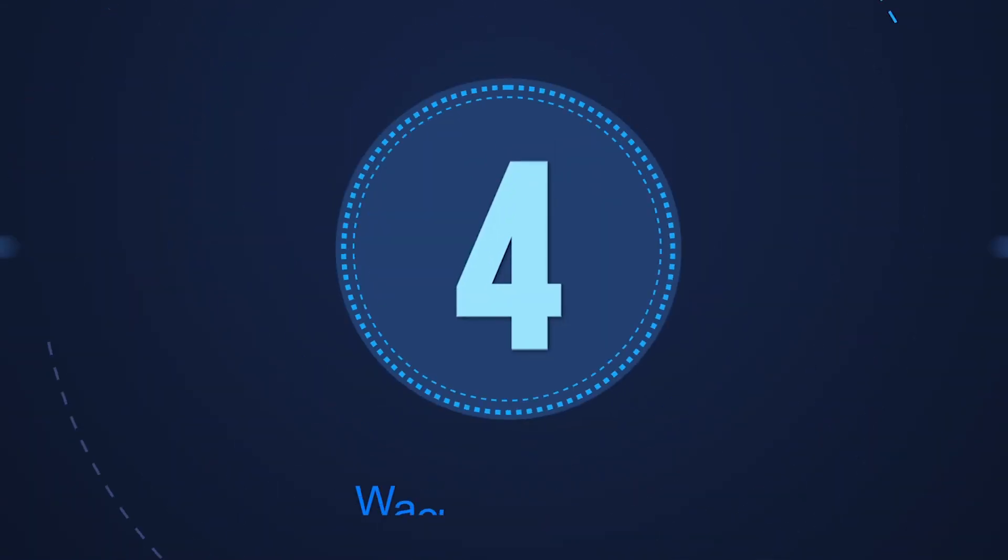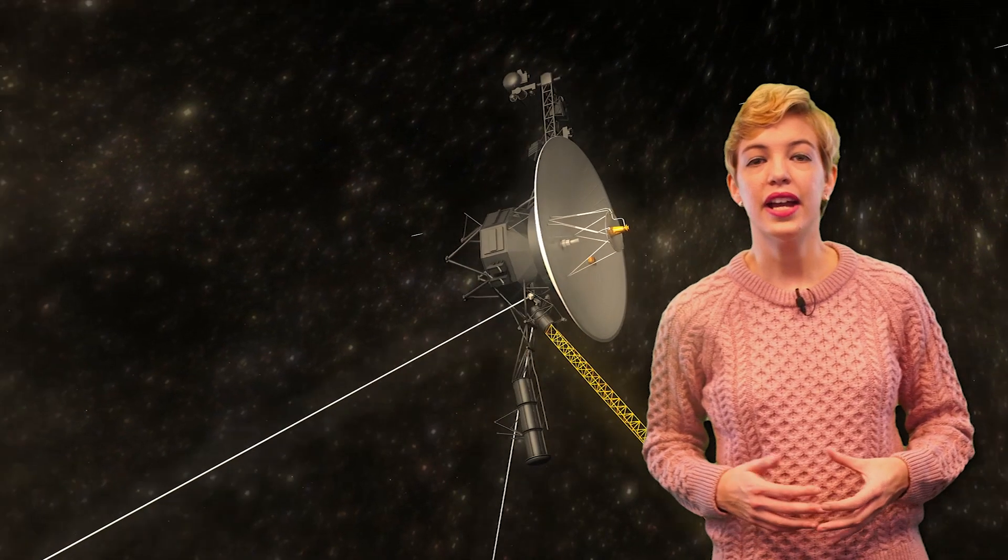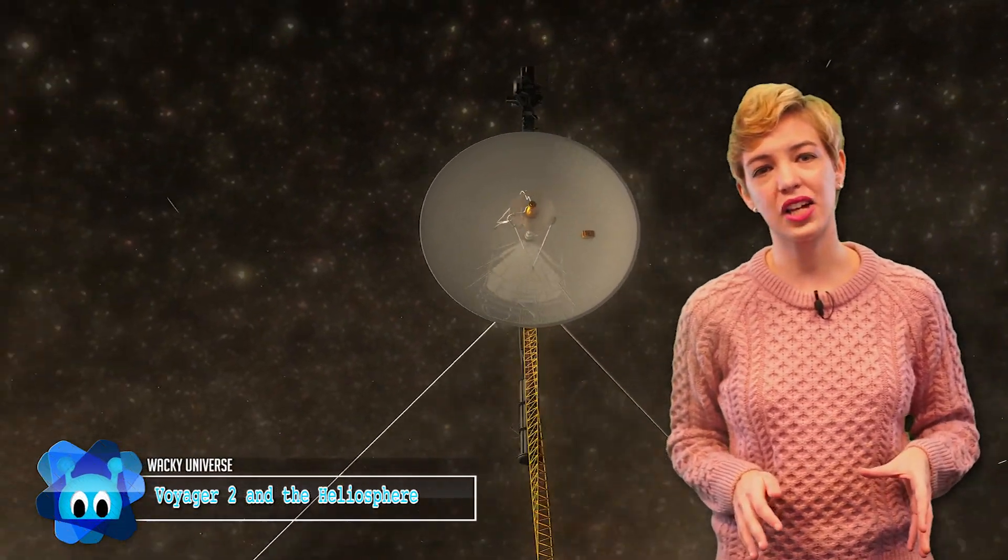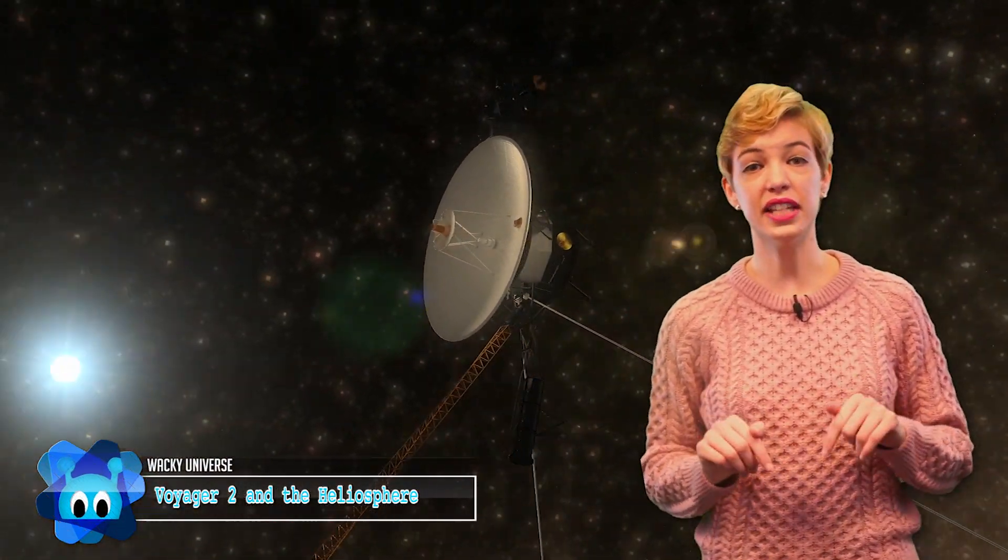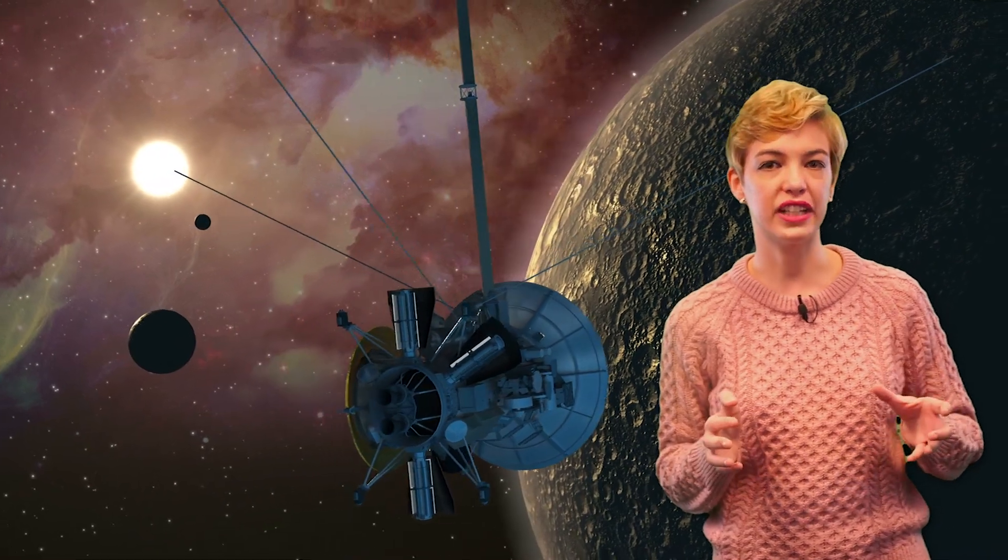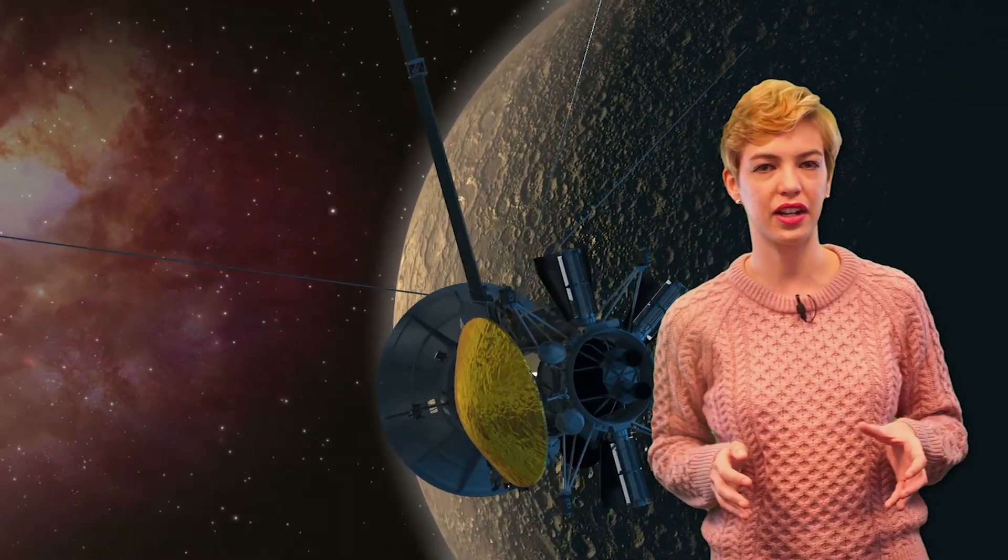Number 4: Voyager 2 and the Heliosphere. Space probe Voyager 2 passed out of our solar system last year, and this year taught us more about the nature of the bubble that comprises our heliosphere, the region where our sun's hot solar winds meet cold interstellar winds from supernovae outside our solar system. We now know that there is a clear barrier between these two plasma energies in the heliosphere, keeping us separated from the rest of the universe.